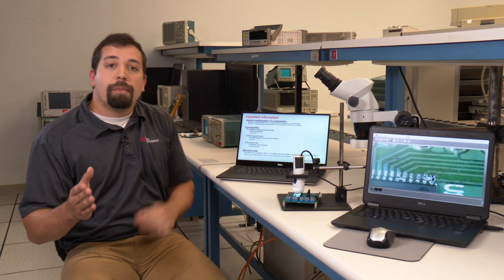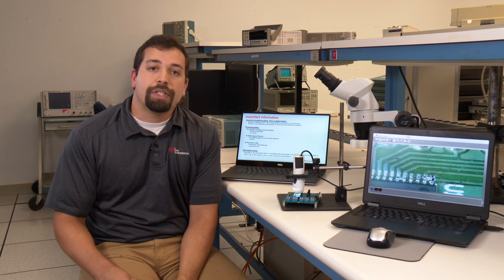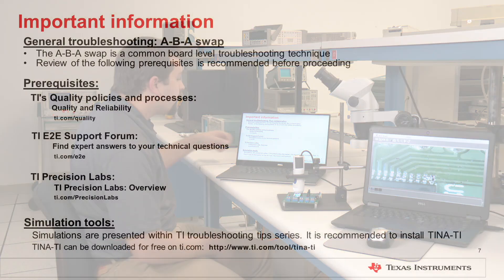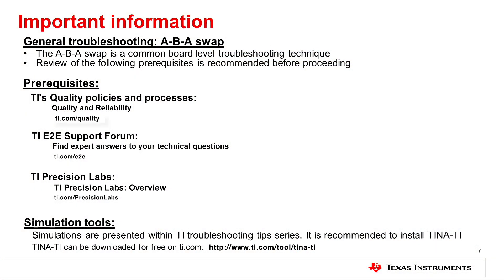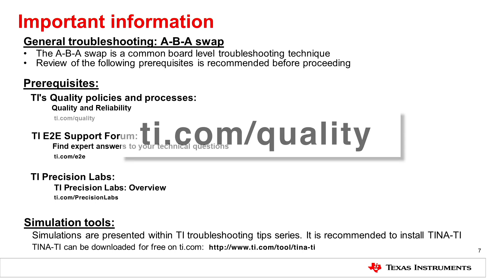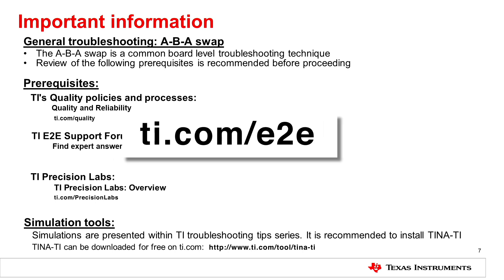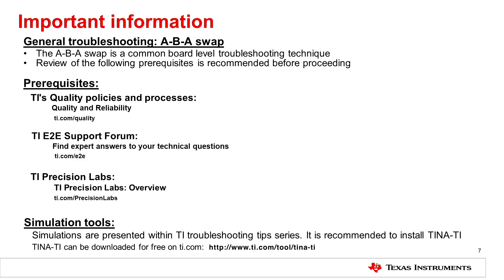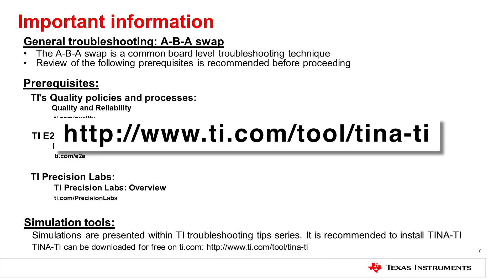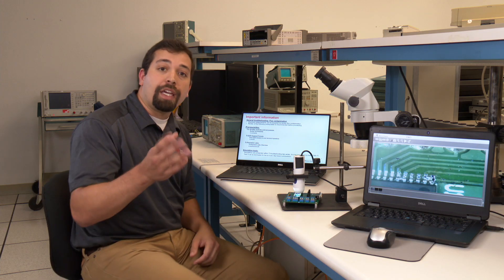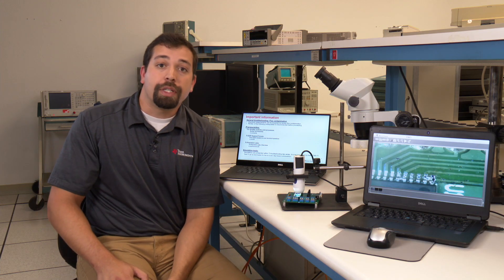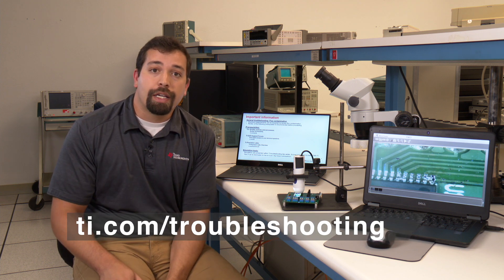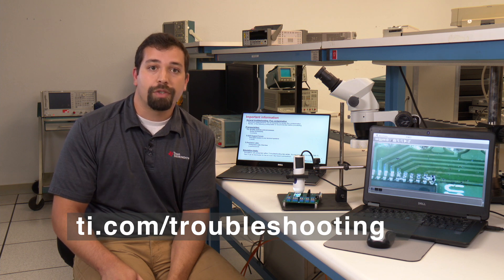It's important to remember when troubleshooting TI components, additional technical collateral can be found on TI.com. There is TI's quality policies and processes on ti.com/quality, TI's E2E support forum, and TI Precision Labs. In addition, TI provides free simulation software for download known as TINA-TI. Thank you for watching TI's troubleshooting tip series on solder flux contamination. For additional training content, please visit ti.com/troubleshooting.